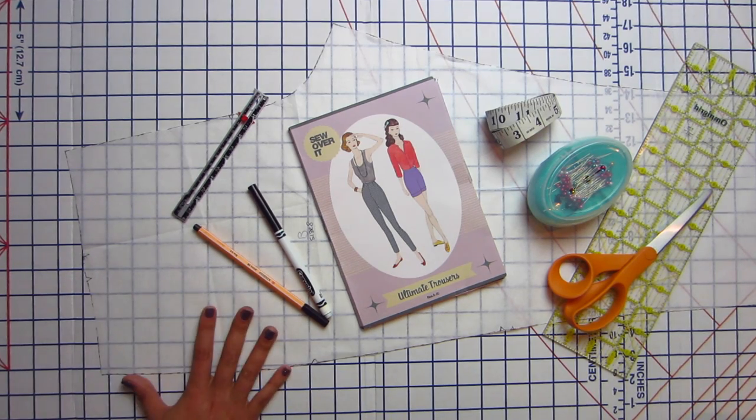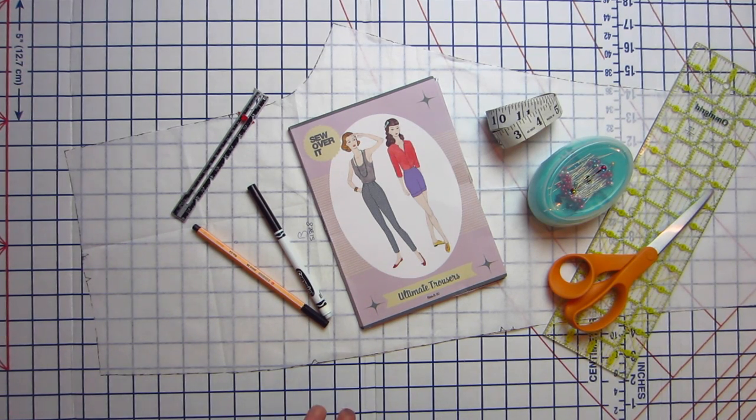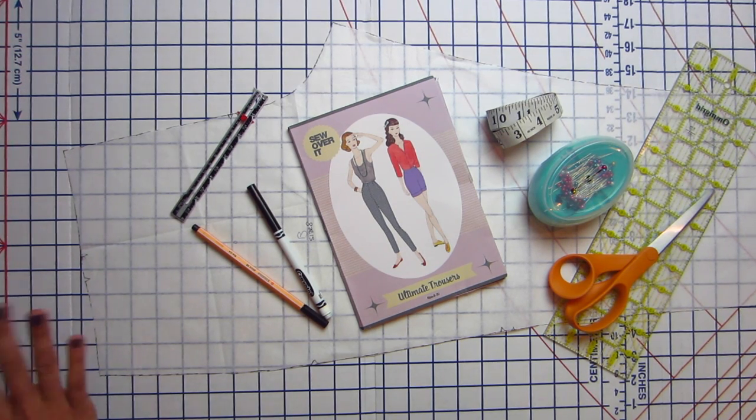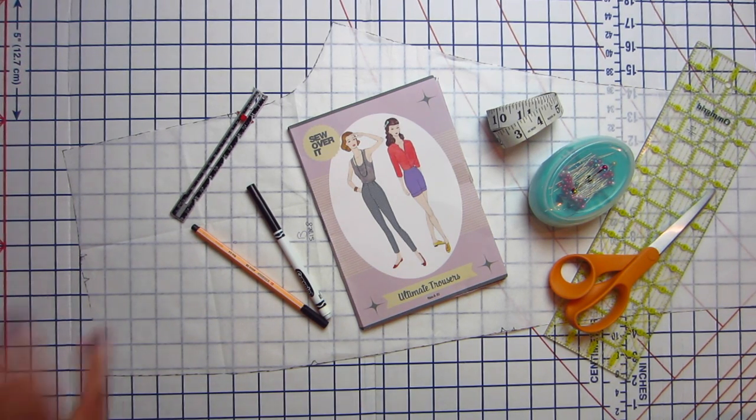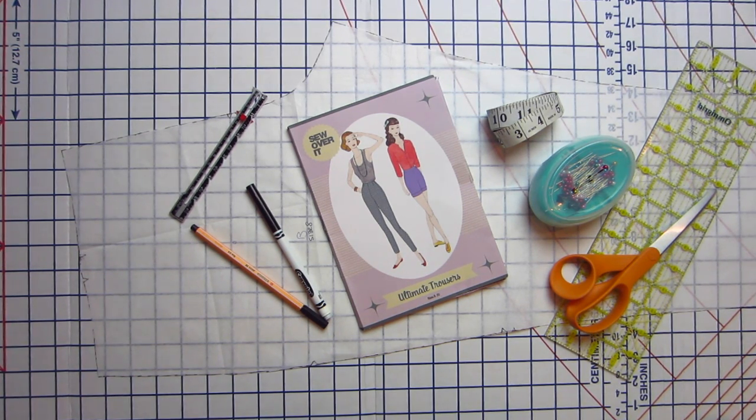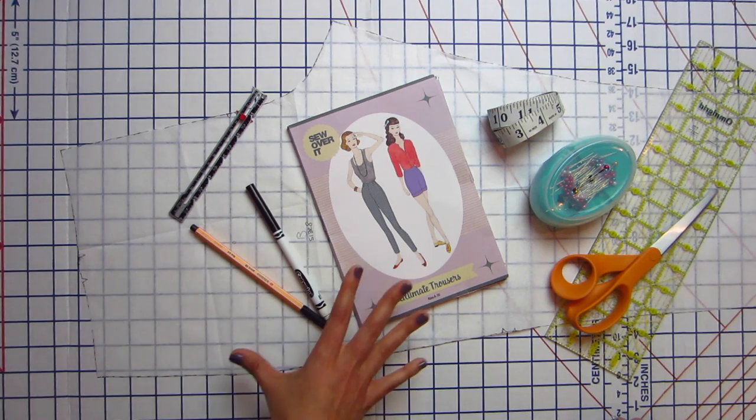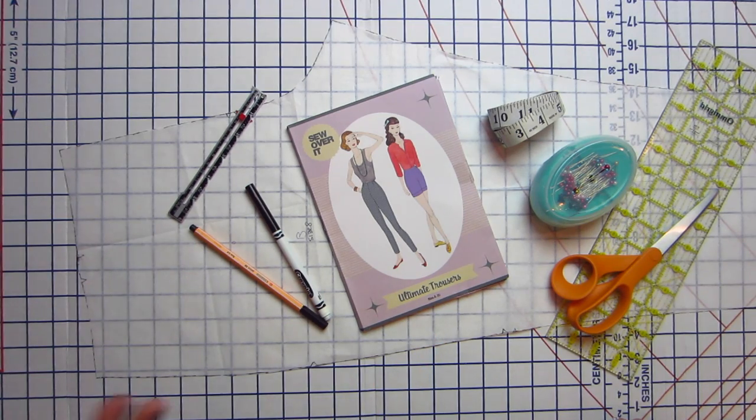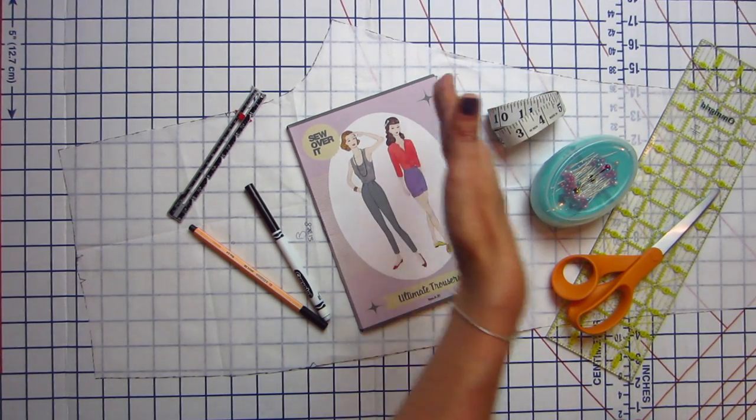So we are going to start off this pattern with a full seat adjustment and kind of see where we land, and that's really how I fit pants. I'll start with my size, I'll do the things I know I have to do, and then I'll make a muslin, and then I'll assess the fit and adjust it on the muslin. Then I'll make another muslin and kind of go back and forth like that until I get a perfect fit. If you want to work on a full seat adjustment but you're nervous about pants, try it on shorts.